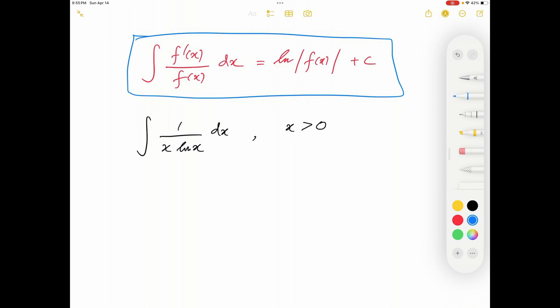But when you use the theorem, this is all you have to see. If you differentiate ln x, you know the answer is 1 over x.